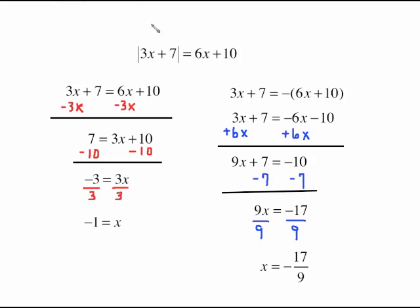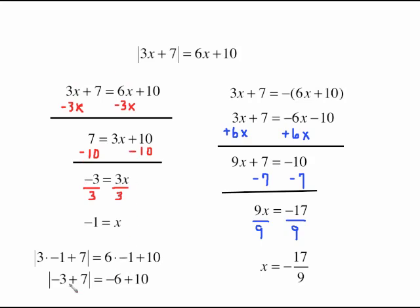As discussed in the first video, when you solve absolute value equations you need to check. Checking x equals negative 1 isn't bad at all. We plug negative 1 in for x: 3 times negative 1 is negative 3, plus 7. On the other side, 6 times negative 1 is negative 6. Negative 3 plus 7 is 4; the absolute value of 4 is 4. On the other side, negative 6 plus 10 is 4. That checks — negative 1 is definitely a solution.